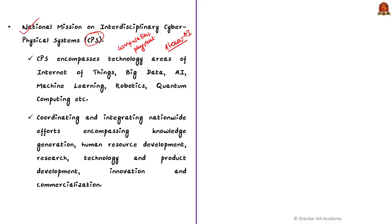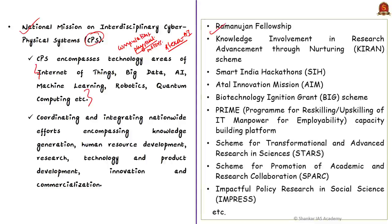With the help of Alexa, we can control many physical devices like motors, engines, and domestic appliances. These systems encompass technology areas of IoT, big data, artificial intelligence, machine learning, robotics, and quantum computing — all current technological inventions grouped together to improve our lives. Apart from this, we have other schemes and fellowships: the Ramanujan Fellowship, Atal Innovation Mission, STARS program, SPARK program, IMPRESS, and INSPIRE. There are many programs the government has brought in to inculcate innovation in citizens.